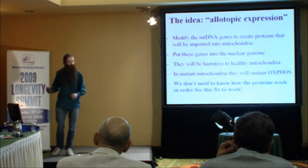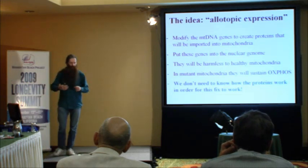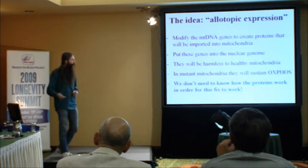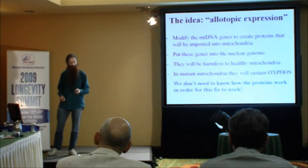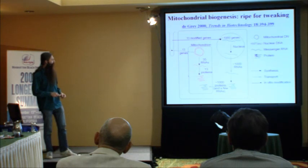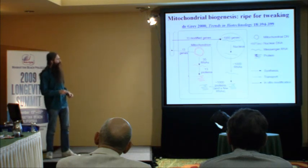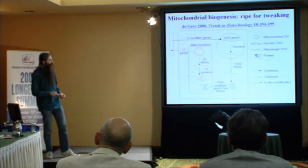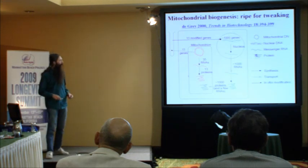The glorious thing about this approach is that it sidesteps all of our enormous ignorance about how these proteins actually work. There's an awful lot still not known about how the individual components of the oxidative phosphorylation machinery actually function — the biggest component, something called complex one, hasn't even been crystallized yet. So this is the basic idea: we take this DNA, modify the genes, and put them into the nucleus so that all 13 are handled like the others.